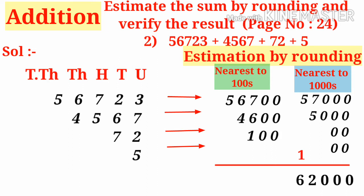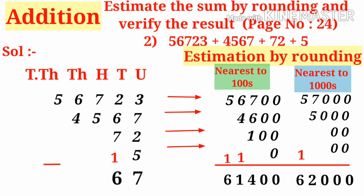Now rounding to the nearest hundred: the first number becomes 56700, the second becomes 4600, the third becomes 100, and the fourth becomes 0. Adding: units give 0, tens give 0, hundreds give 14 so 4 with 1 carried, thousands give 11 with 1 carried, and ten-thousands give 6. The estimated sum is 61400.